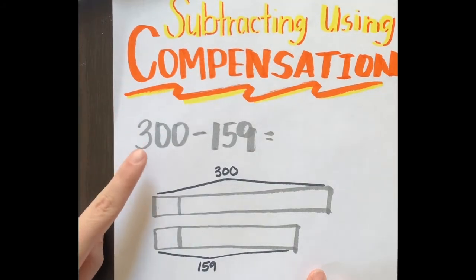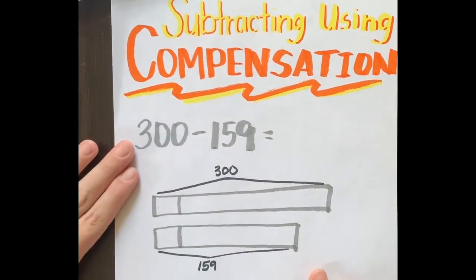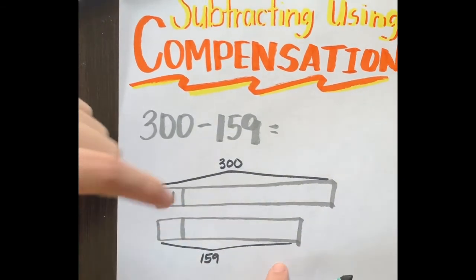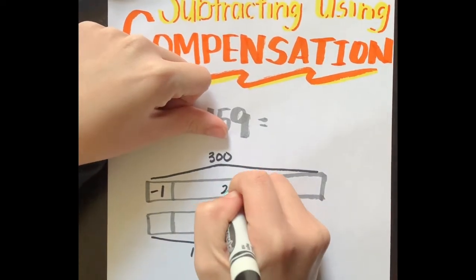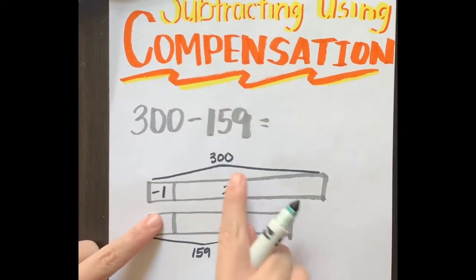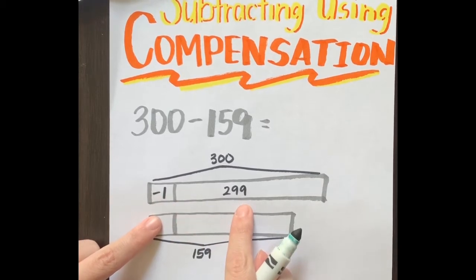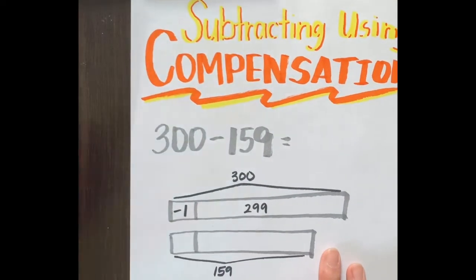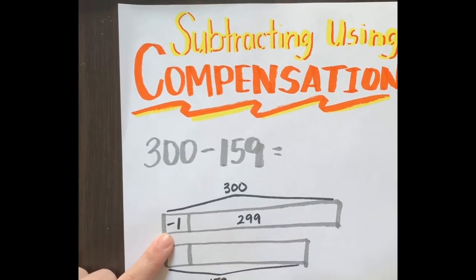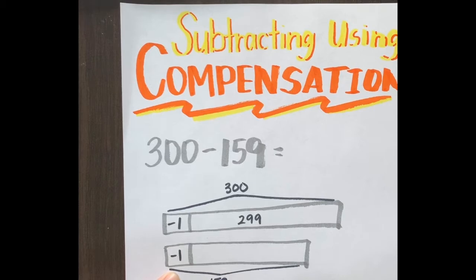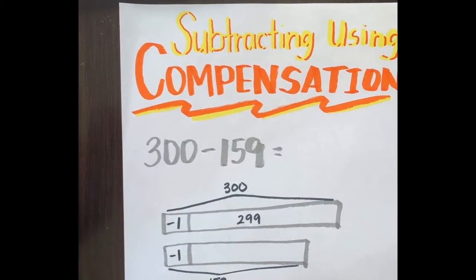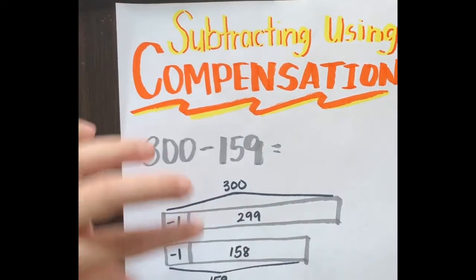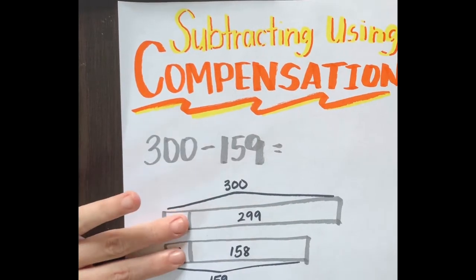To change these into nines, I'm going to subtract one. 300 minus one - counting down: 300, 299. Whatever I do to one number I must do to the other. If I'm subtracting one from my 300, I also need to subtract one from my 159. Counting down: 159, 158.